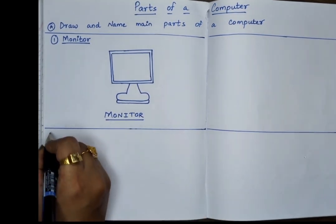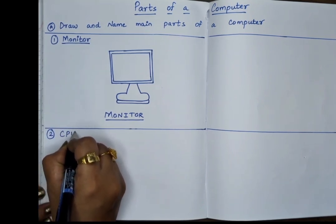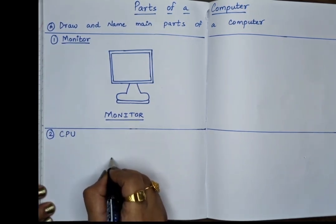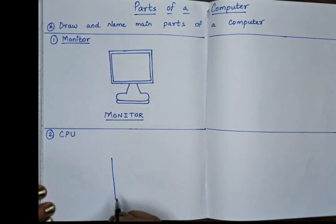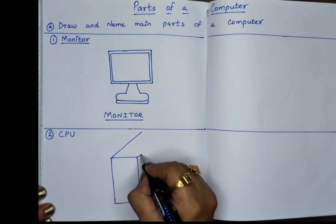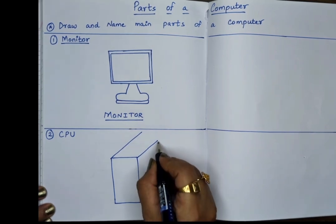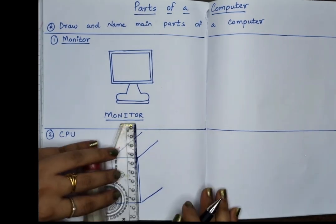Now the second part is CPU. Let's draw CPU. CPU means central processing unit. It is the brain of the computer. It helps the computer think and work.